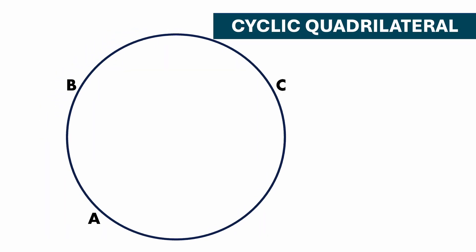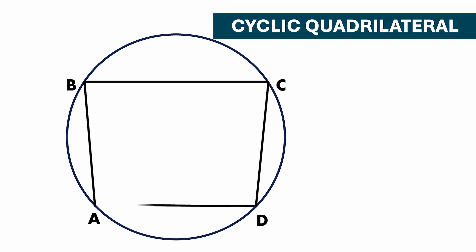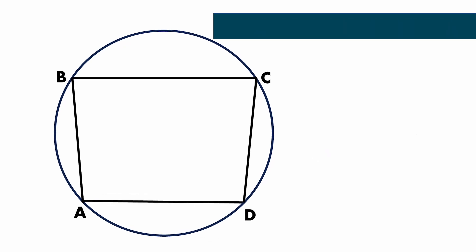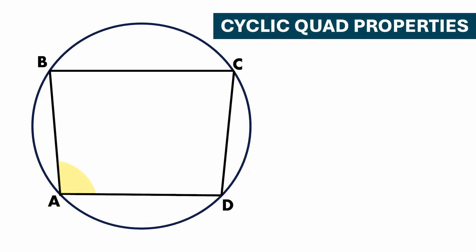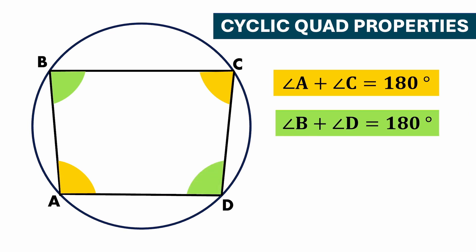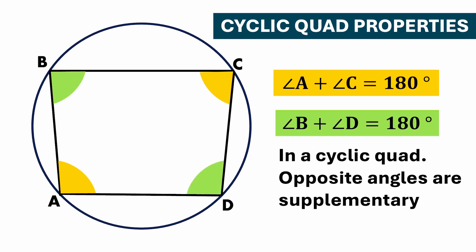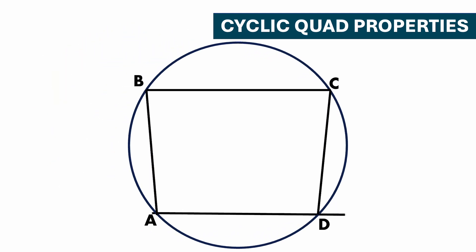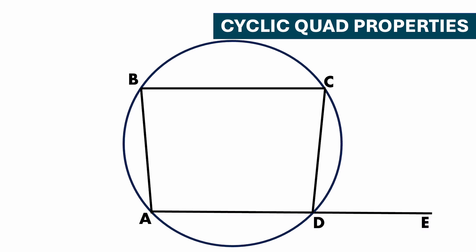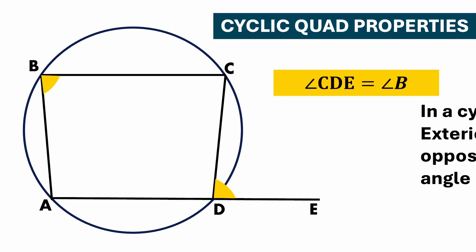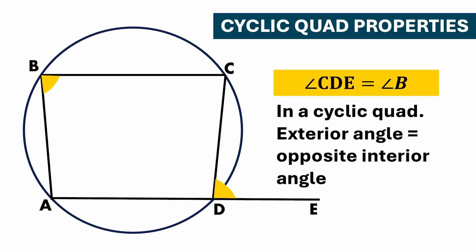If A, B, C and D are four points lying on the circumference of a circle, then ABCD is a cyclic quadrilateral. In a cyclic quadrilateral, angle A plus angle C equals 180 degrees, and angle B plus angle D equals 180 degrees — opposite angles are supplementary. Also, if you extend AD to E, then angle CDE equals angle B, meaning the exterior angle equals the opposite interior angle.